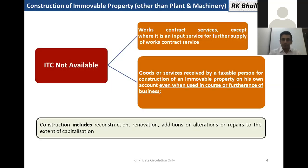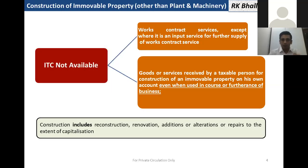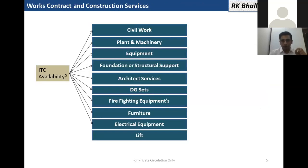In this section there is an exclusion: input shall be allowed if the works contract or goods or services are received by a taxable person for construction of plant and machinery. So for purchase or construction of plant and machinery, input shall be allowed — they are not in the negative list as per both these clauses. So while constructing our premises or factory, we have to see whether the equipment or item falls under plant and machinery or as a civil structure. Input is barred in case of civil works only, as per these clauses.